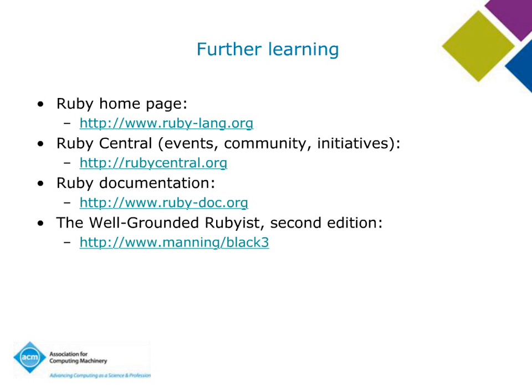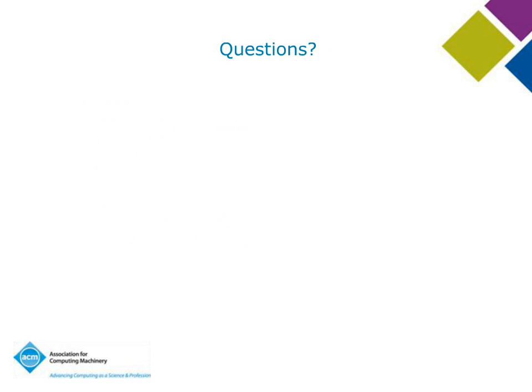Just a few URLs: the Ruby homepage, Ruby Central which puts on conferences and events, RubyDoc.org for current and past documentation, and of course my book The Well-Grounded Rubyist, coming out in a second edition hopefully this spring in June — it's available now for pre-order. That concludes our little tour. I'm happy to take questions.